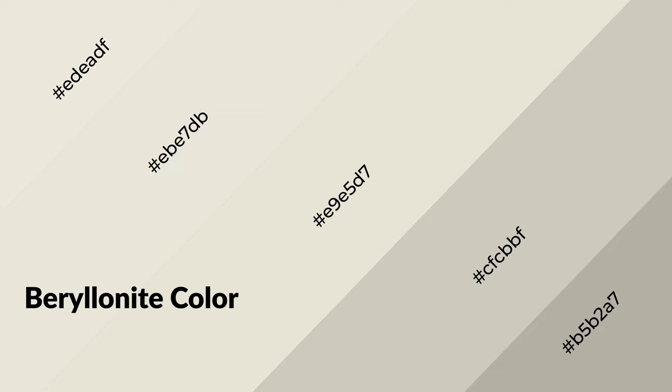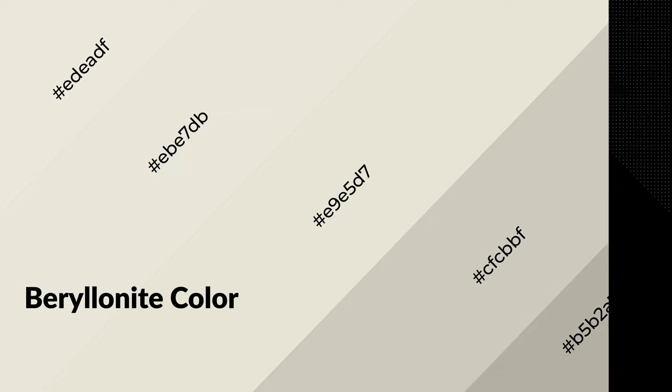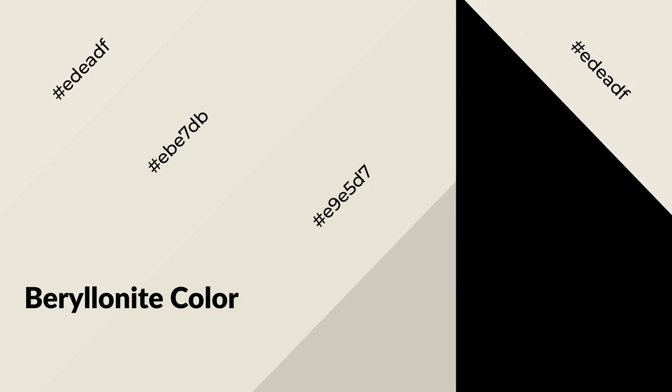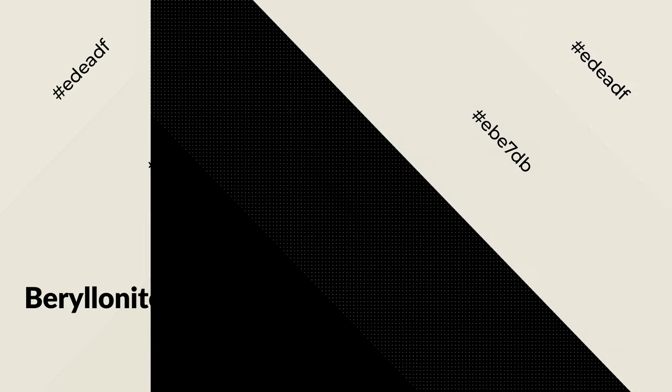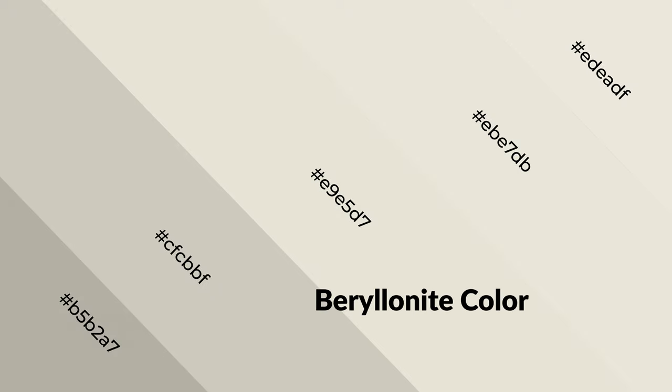Beryllinite is a warm color and it emits cozier and active emotions. Warm colors are symbols of warmth, fire, heat, and sunshine. It also evokes joy, passion, love, and even anger. You can see them used in restaurants and gyms.